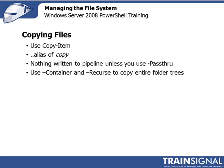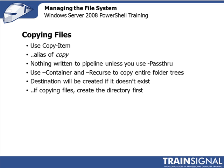If you need to copy entire folder trees and want to maintain that structure, be sure to use the -Container and -Recurse parameters. The destination will be created when you do that, if it does not exist on the target folder or directory. However, if you are copying just files to another directory, make sure that that directory exists first, otherwise you'll get really weird results.